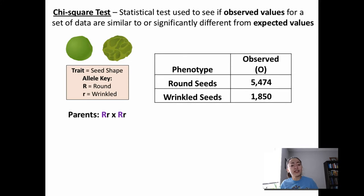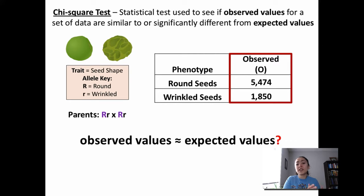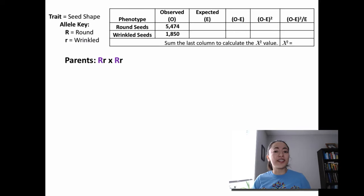Now the question is, are these observed values similar to or are they different from what we would have expected to see from a cross between two heterozygous individuals? In order to answer this question, we can just do a simple chi-squared test.